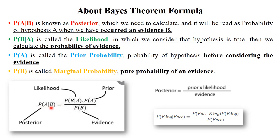According to the Bayes' theorem formula, the first term — probability of A given B — is called the posterior probability, meaning event B has already occurred and you calculate the probability of event A. The second term — probability of B given A — is called the likelihood, meaning event A has already occurred and you find the probability of B. The third term — probability of A — is called the prior probability: before considering any information or generating any evidence, you calculate the probability of event A.